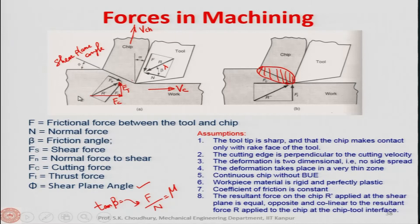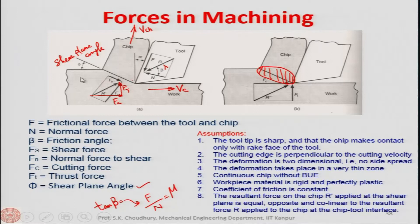We resolved R and R-prime into components. R has two components: F, parallel to the rake face of the tool, and N, perpendicular to it. N is the normal force and F is the friction force. Similarly, R-prime — the resultant force acting on the chip from the work piece through the shear plane — is resolved into Fs, parallel to the shear plane, and Fn, normal to the shear plane.